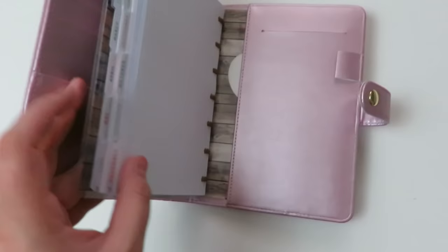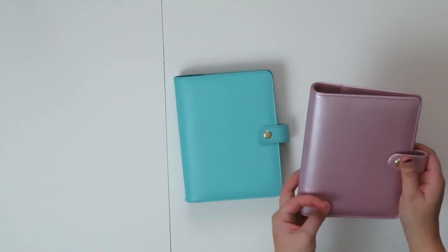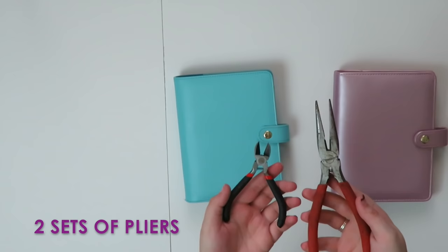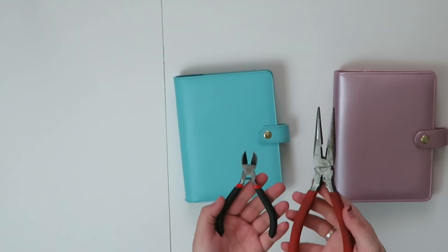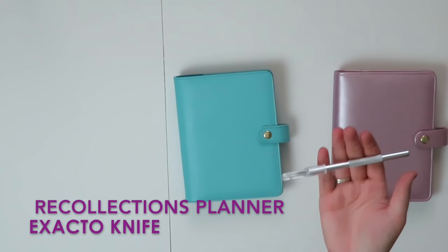Here I have my six ring rose metallic binder by Recollections and you only need a few supplies for this. You are going to need two sets of pliers. It is suggested that you have two different kinds of needle nose pliers but I don't have that so I'm just going to make do with what I have. You will also need an exacto knife and your planner.